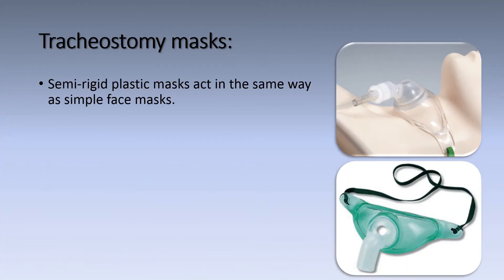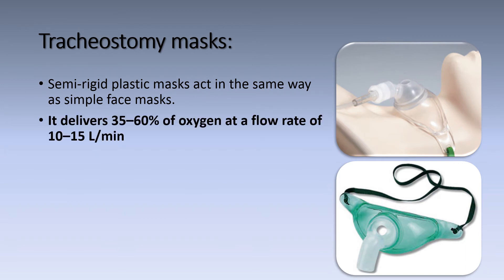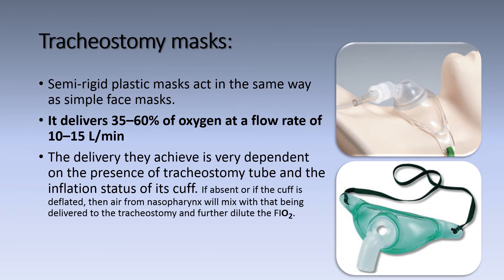Tracheostomy masks are rigid plastic masks that act in the same way as a simple face mask. They deliver 35 to 60% oxygen at a flow rate of 10 to 15 liters per minute. The delivery they achieve is very dependent on the presence of a tracheostomy tube and the inflation state of its cuff.